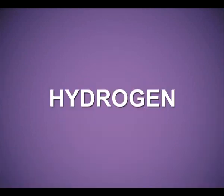Dear students, I hope and I am sure that you all know the first element of the periodic table, that is hydrogen. It is the most abundant and the lightest element known. It was discovered by Henry Cavendish and its name hydrogen was proposed by Lavoisier, because when it burns in the presence of oxygen it produces water. Today, we will discuss the unique position of hydrogen in the periodic table.